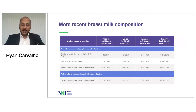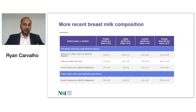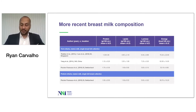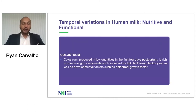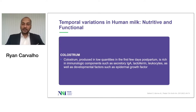In some of the more recent studies, particularly Sager Tucker's publications from 2013 and another recent study in 2016, we see these compositions vary over time. We also know from more recent data that when you look at macronutrient composition in preterm versus term milk, there is a compositional difference — with components like protein being significantly higher in preterm babies compared to term babies at controlled gestational ages and time post-delivery. One very important component of human milk providing both nutritive and functional benefits is colostrum. Produced in low quantities in the first few days postpartum, it is very rich in immunologic components such as secretory IgA, lactoferrin, leukocytes, as well as developmental factors such as epidermal growth factors.